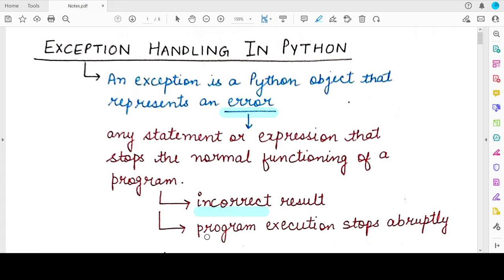And the formal name given to an error is exception in Python and an exception is a Python object that contains all the information about the error that has occurred. So this information includes the name of the error or the line where it has occurred, and it might also include some information about handling that exception.